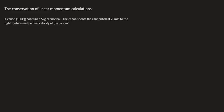Hello everyone, so here is another question. In this question we have a cannon that is going to shoot a cannonball. It tells us that we have a cannon of 150 kilograms and it's got a 5 kg cannonball. The cannon shoots the cannonball at 20 meters per second to the right to determine the final velocity of the cannon.